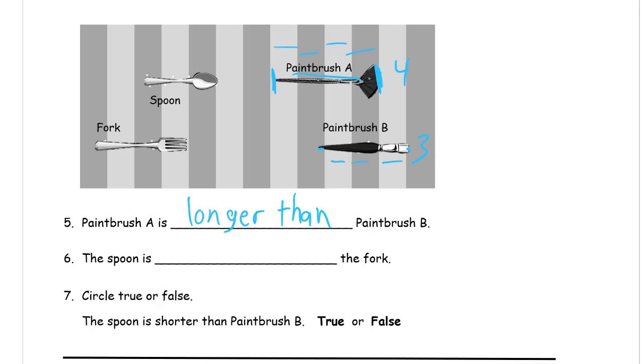The spoon is, is it longer or shorter than the fork? Well the spoon is one, two, it's almost three. The fork is one, two, three, plus a little bit more. So the spoon is definitely shorter than the fork.